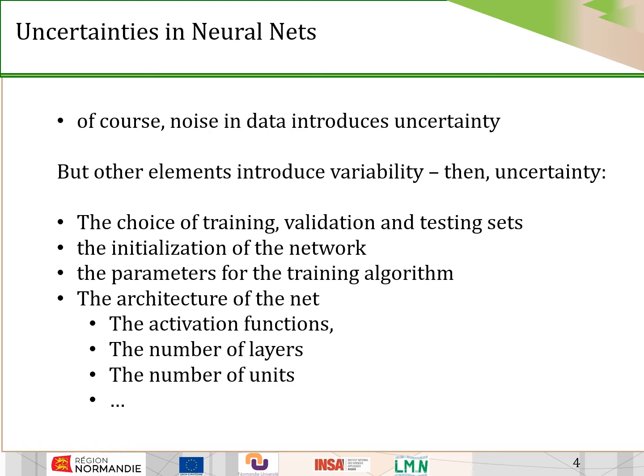Noise in the data introduces uncertainty, but there are several elements in a neural network that introduce variability. For instance: the choice of the training, validation, and testing sets; the initialization of the network; the parameters for the training algorithm, which are minimization algorithms that need some parameters to run; and the architecture of the network — the activation function, the number of layers, and the number of units. We have many factors that may give some variability or introduce uncertainty.